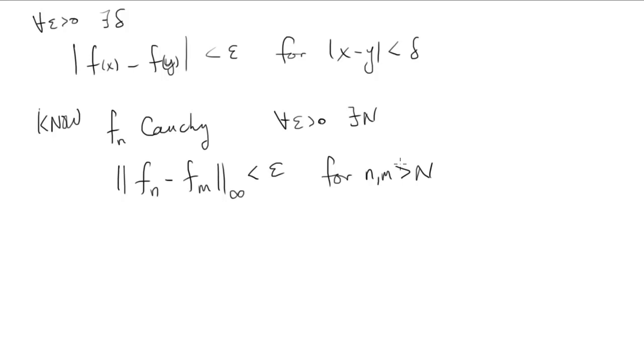Given any epsilon, I can find a cutoff so the tail is all crammed together. Here's the key fact for uniformity, is that cutoff does not depend on the point we choose. We can use the same cutoff for X and for Y.